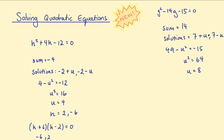Plugging back in: g = 7 + 8 = 15, and g = 7 - 8 = negative 1. To check, the factors of 15 that make negative 14 are negative 15 and positive 1, giving the same solutions when you factorize.